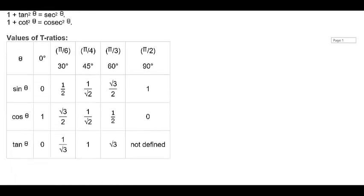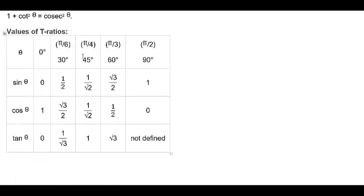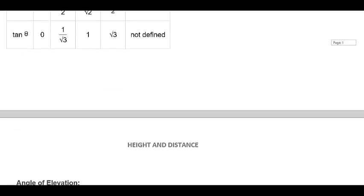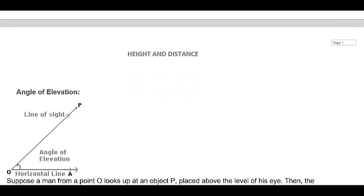These are the values of trigonometric ratios. Sin 0° = 0, sin 30° = 1/2, sin 45° = 1/√2, sin 60° = √3/2, sin 90° = 1. Cos 0° = 1, cos 30° = √3/2, cos 45° = 1/√2, cos 60° = 1/2, cos 90° = 0. Tan 0° = 0, tan 30° = 1/√3, tan 45° = 1, tan 60° = √3. You should know these values before solving height and distance problems.